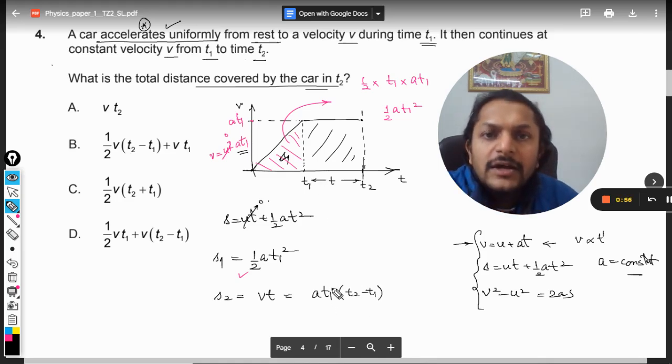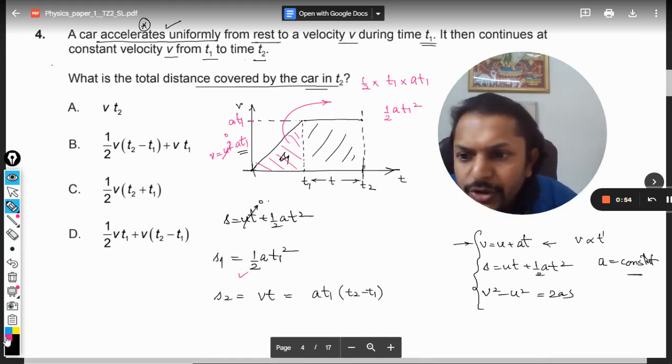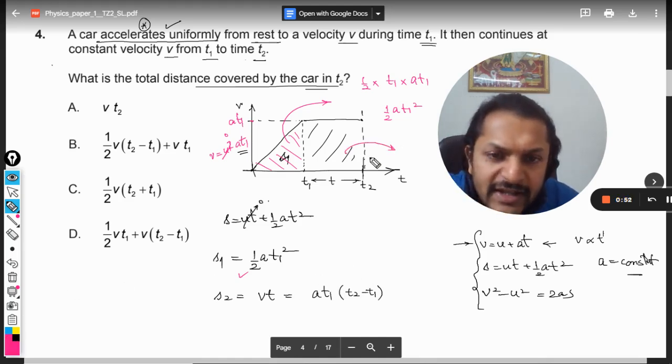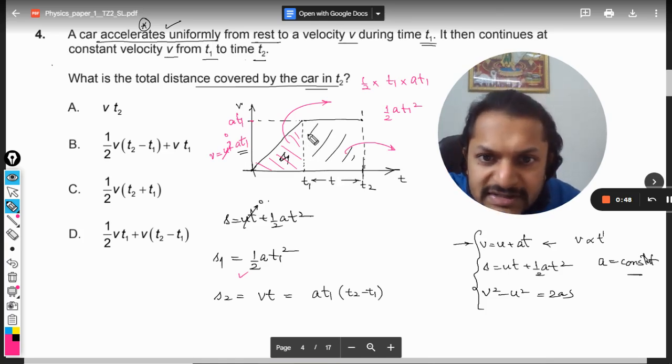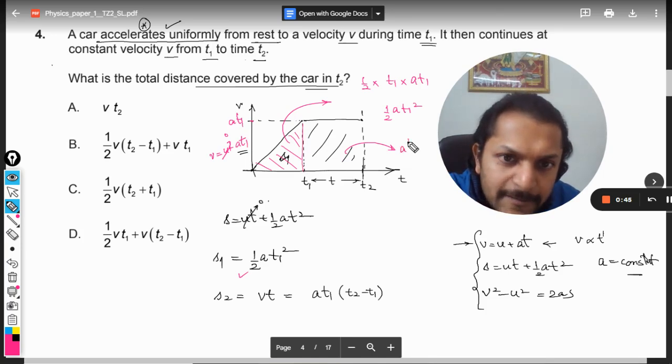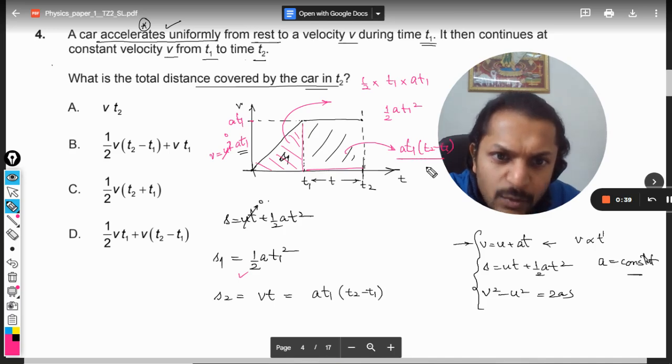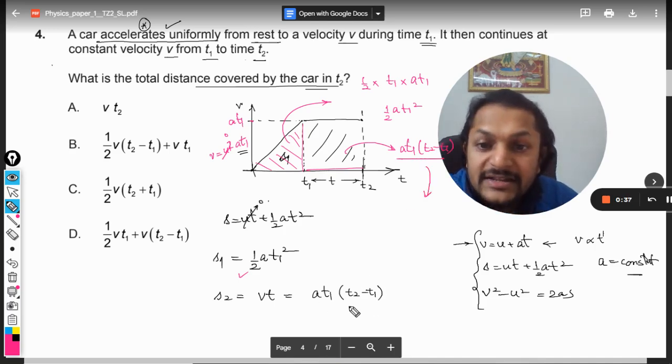And from the area point of view also, if you want to find area, it's a rectangle, so you can say length multiply by breadth. So what is this breadth? It is At1 multiply by this, which is t2 minus t1. And exactly the same thing we are getting there.